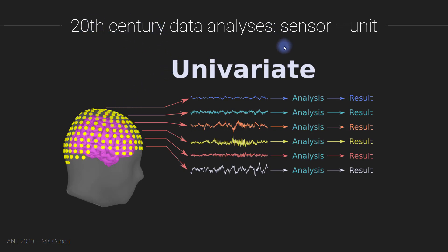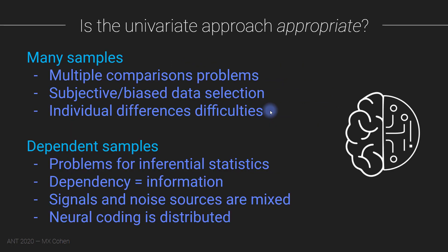The traditional way of doing multi-channel data analysis is to apply your statistical analysis to each data channel separately, giving you a separate result. With 250 channels, you apply 250 analyses and get 250 results. This is called the univariate or mass univariate approach — massively performing univariate analyses where each channel is considered its own separate thing. The question is: is this an appropriate way to approach modern large-sample datasets?